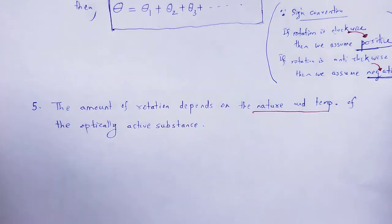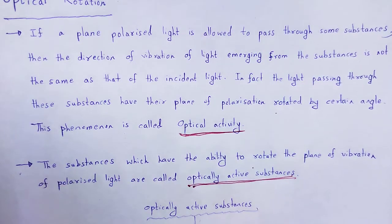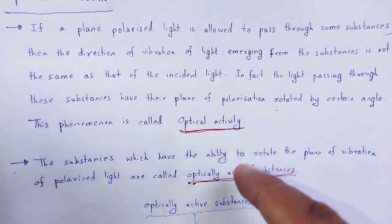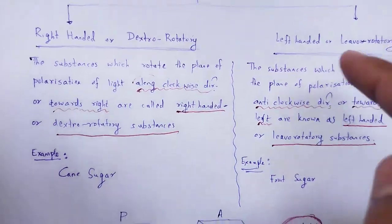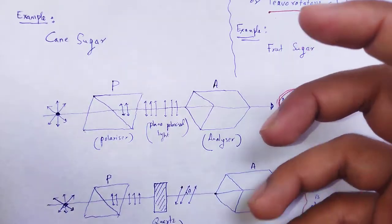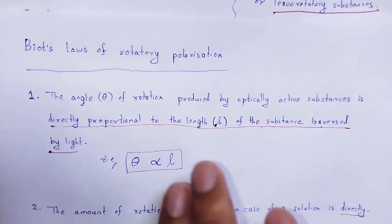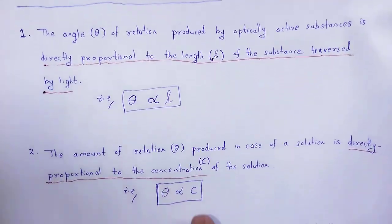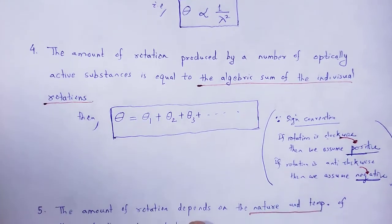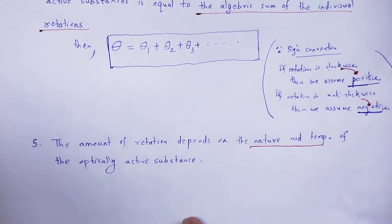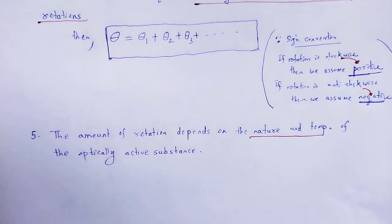How the rotation is directly proportional to the length, proportional to the concentration, inversely proportional to the square of the wavelength, the total optical rotation is the sum of individual optical rotations, and the amount of rotation depends upon the nature and temperature of the optically active substance. So, with the help of this video lecture, we understand the concept of optical rotation, the phenomenon of optical activity, optically active substances, right-handed or dextrorotatory, left-handed or laevo-rotatory, and Biot's laws of rotatory polarization. Thank you.